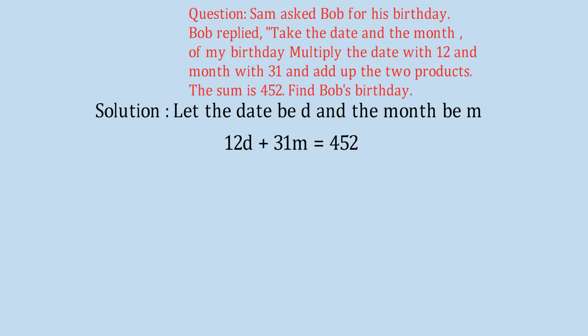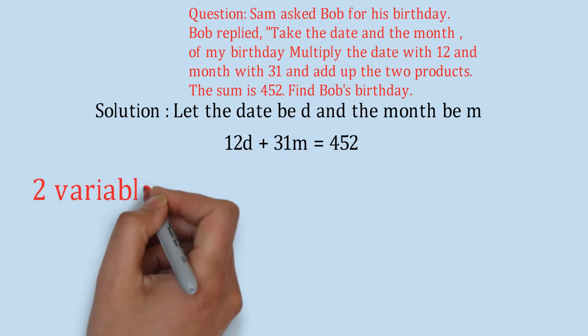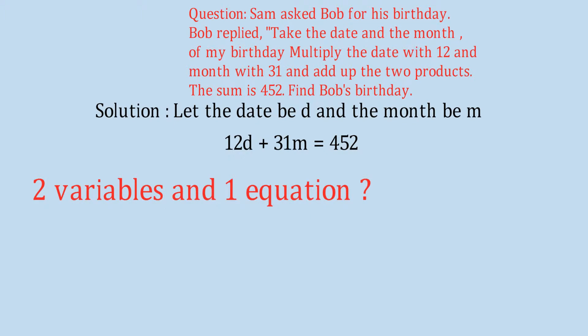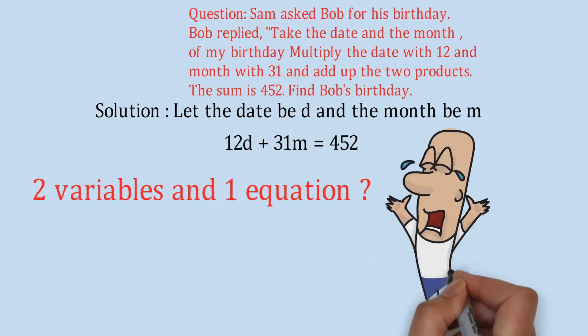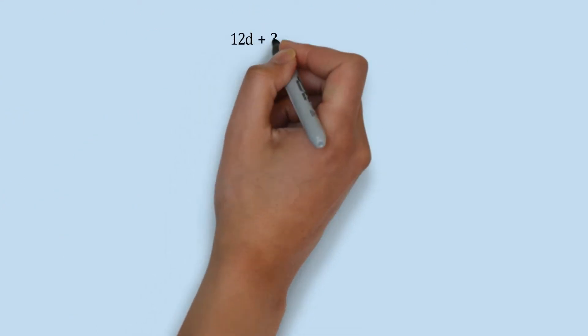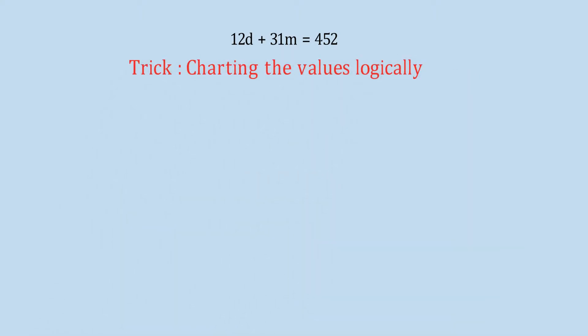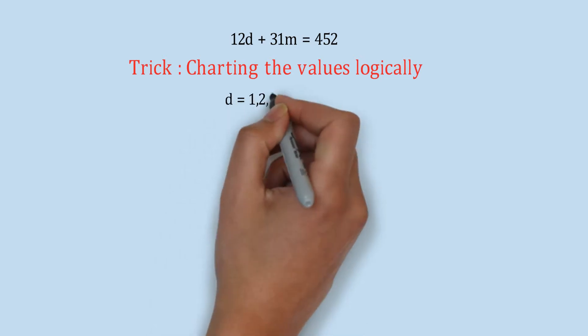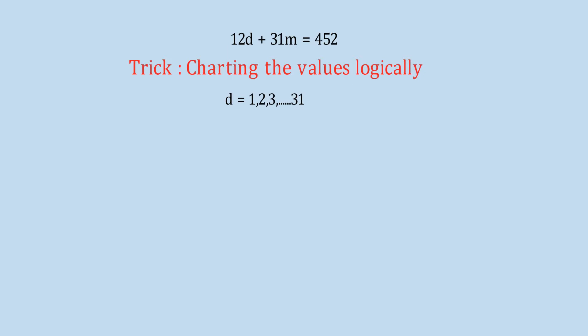There are two variables, D and M, but only one equation: 12D plus 31M equals 452. So we have a headache here - but we have a strategy. The trick is to chart the values logically. D is the number of days, so D can only be 1, 2, 3 up to 31, because maximum 31 days are in a month. Similarly, M can be 1, 2, 3 up to 12 because there are only 12 months in a year.